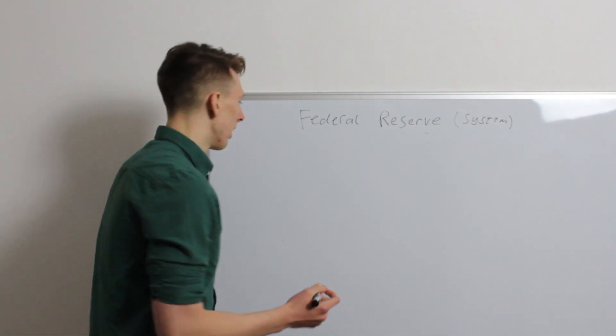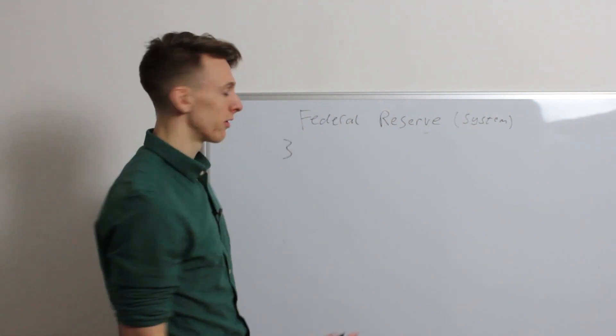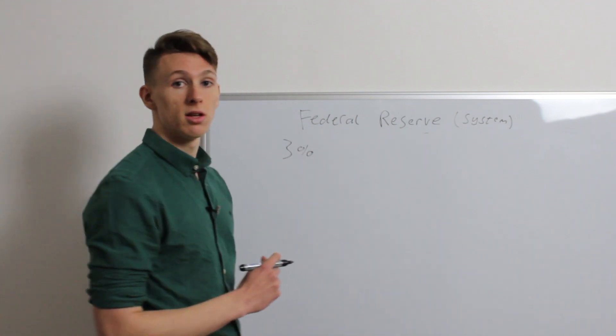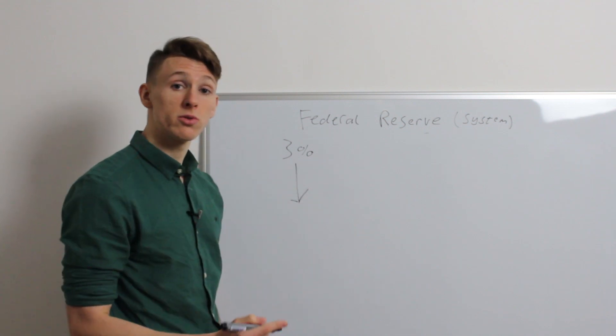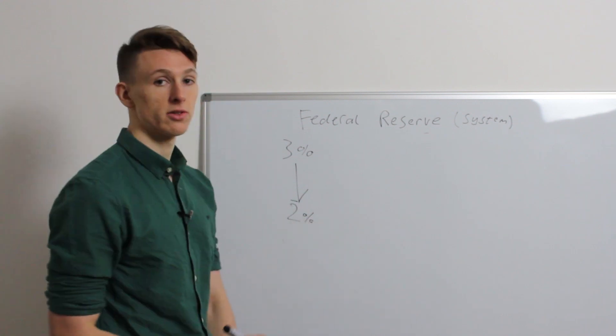Now, say the current effective federal funds rate is 3%, and they want to move it towards their chosen target rate of 2%. How are they going to do this?